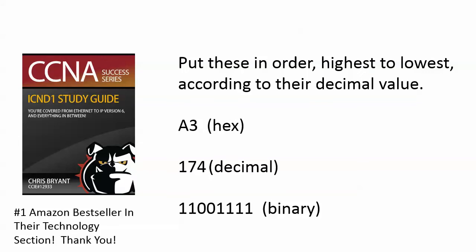Put these in order, highest to lowest, according to their decimal value. We have A3 in hex, 174 already converted to decimal for us, and then 11001111 in a binary string.